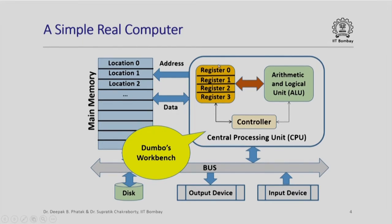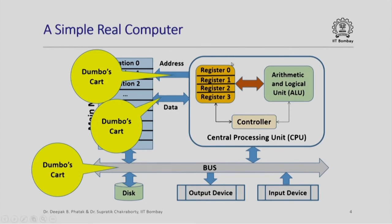Recall that Dumbo had a workbench where Dumbo would keep values and do operations with them, fetching values from named drawers to the workbench. In a real computer, that part is called the central processing unit or CPU. A CPU has several registers — we will study more about what registers really do. A CPU also has an arithmetic and logic unit where real computation happens, and it has a controller. In a real computer, the analog of Dumbo's carts are called buses, with an address bus, data bus, and a bus connecting disk and input/output devices.